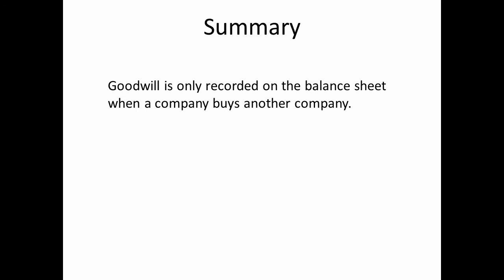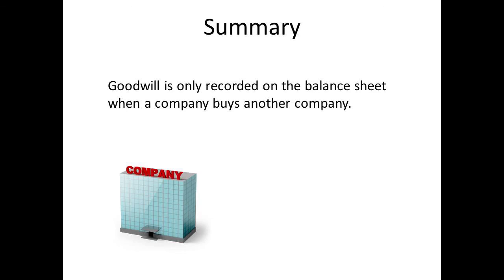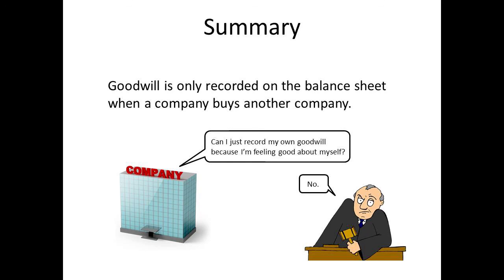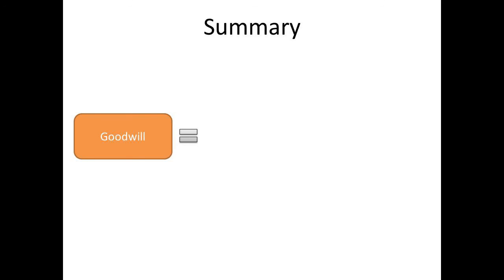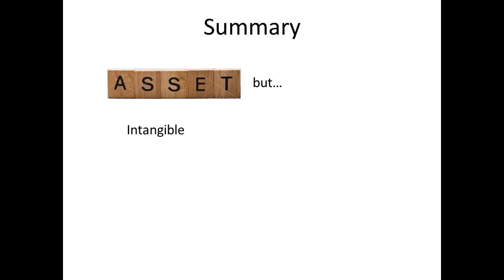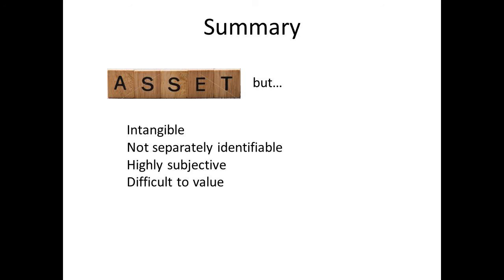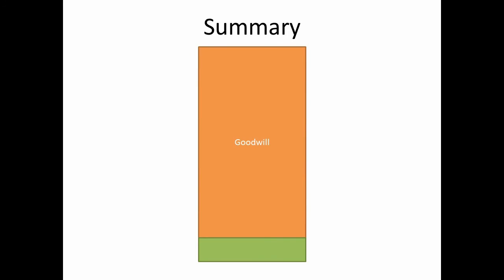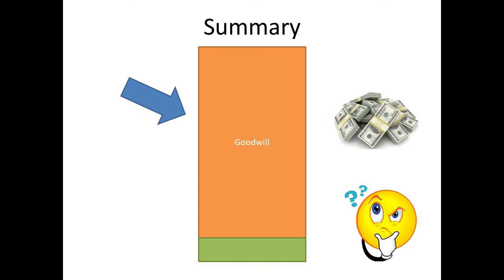So to summarize: goodwill is only recorded on the balance sheet when a company buys another company — if a company has never bought another company, you shouldn't see a goodwill line. The goodwill from a purchase is calculated as the difference between the total purchase price and the net identifiable assets. Goodwill is recorded as an asset, but it is intangible, not separately identifiable, highly subjective, and really difficult to value. So the next time you see a really big number in the goodwill line, just remember that it's not really a hard asset — you've got to ask yourself how this company is actually planning on turning that number into real cash in the future.